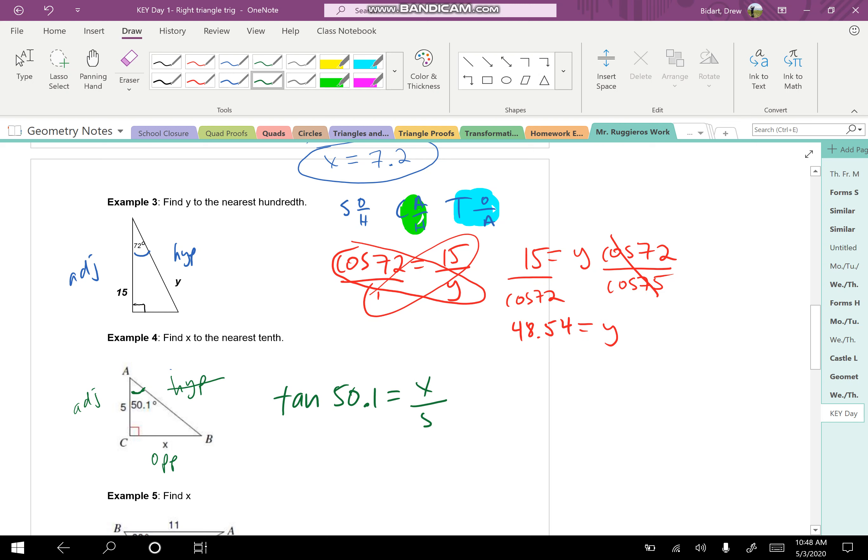So in this case, we write that as the tangent, the tan of the angle, is equal to the opposite over the adjacent. When I cross multiply, now look how this is different than the one above it. Look at where the variable is.